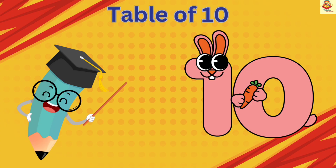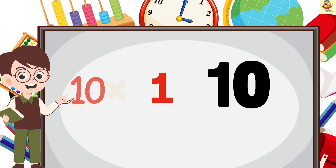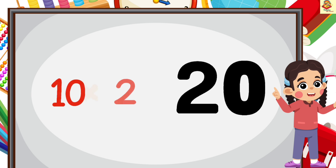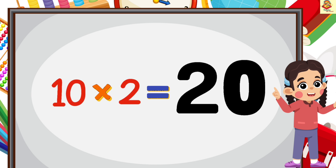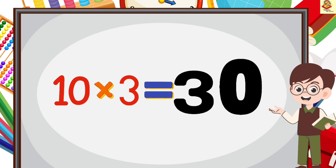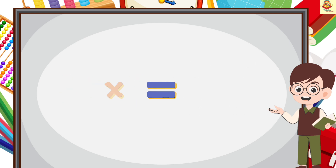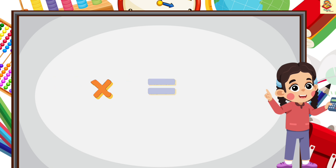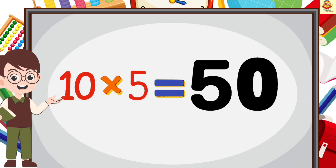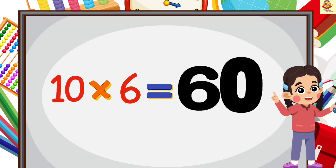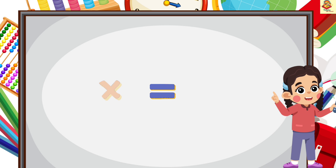Now table of 10. 10 ones are 10, 10 twos are 20, 10 threes are 30, 10 fours are 40, 10 fives are 50, 10 sixes are 60.